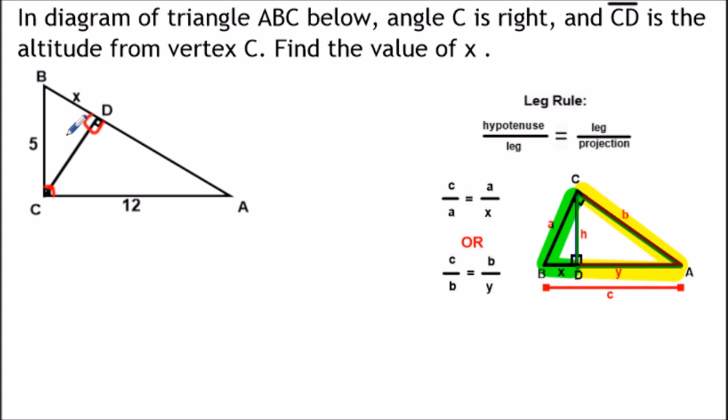So these three triangles in this diagram are all similar, so we could set up this proportion here. Now the proportion could be expressed in words or symbolically with letters, so whichever one you find to be easier is the one that you'll use.